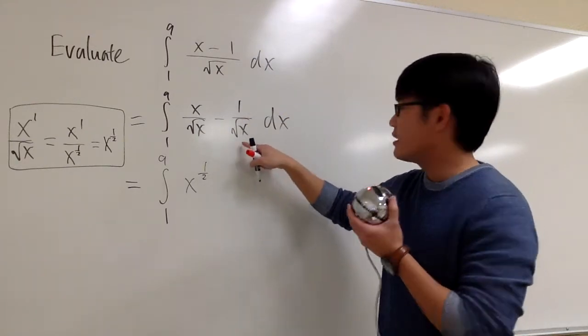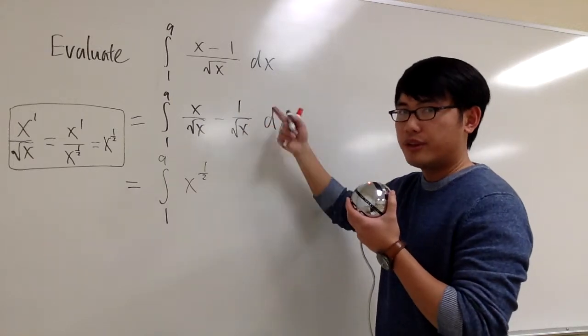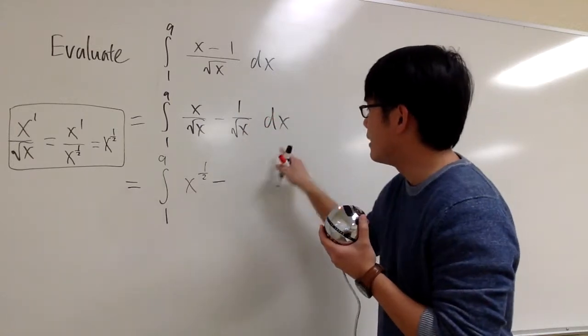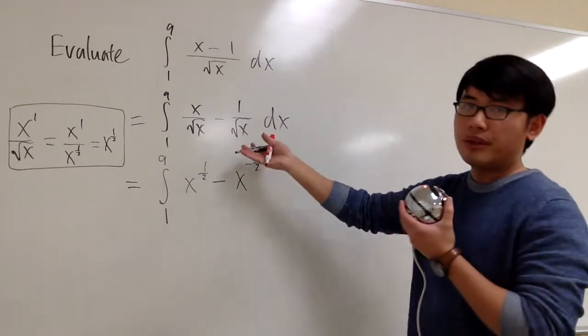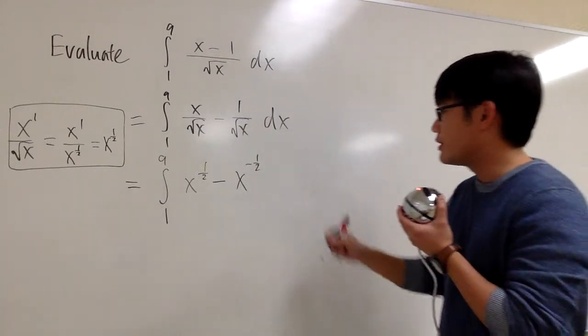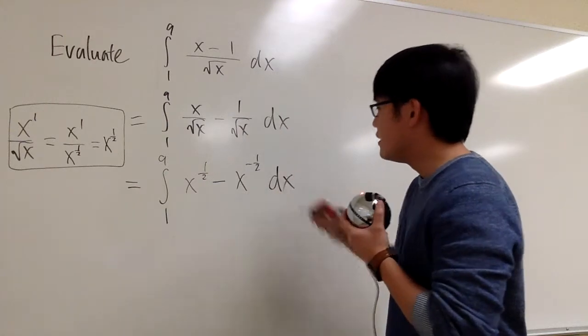And for the second one, we have minus 1 over square root of x. So this is like x to the one-half on the bottom. So I can bring that up. This is going to be minus x to the negative one-half after I bring that up, with a negative exponent. We still have the dx after that.